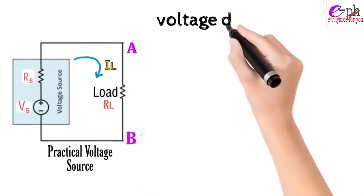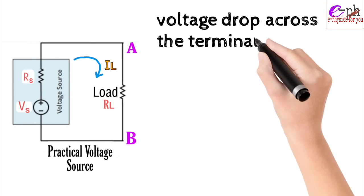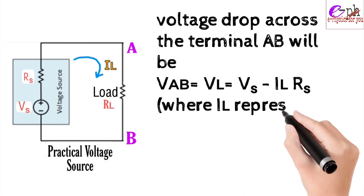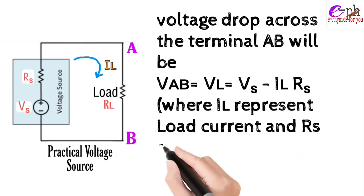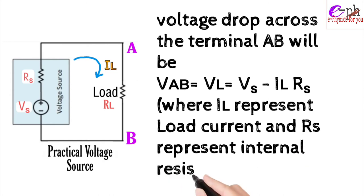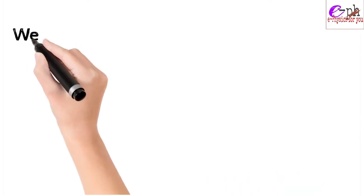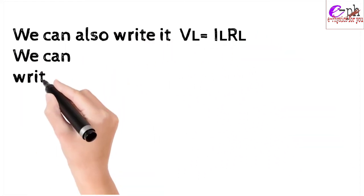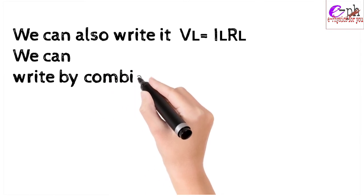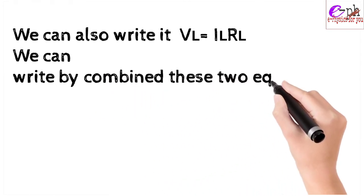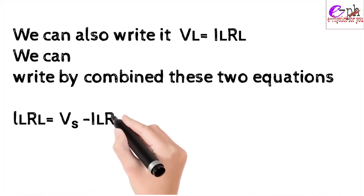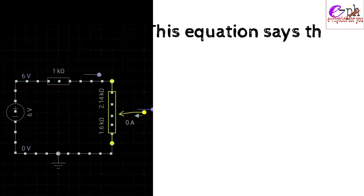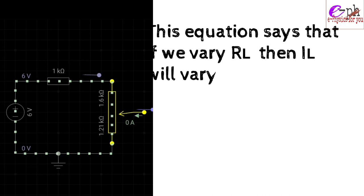By applying KVL, the voltage drop across terminal AB is: V_AB = V_L = V_S − I_L × R_S, where I_L represents load current and R_S represents internal resistance. We can also write V_L = I_L × R_L. Combining these two equations: I_L × R_L = V_S / (R_S + R_L).